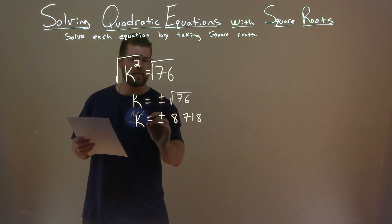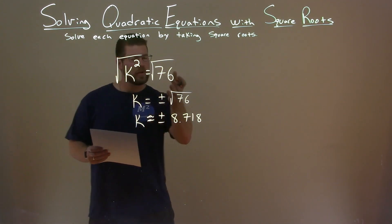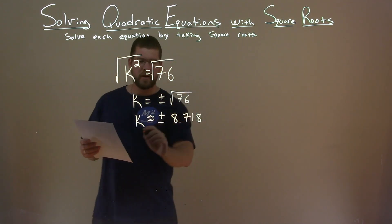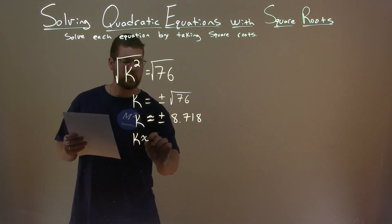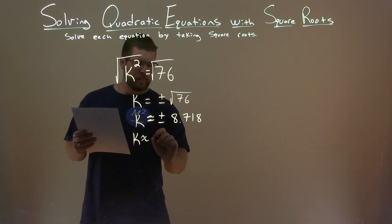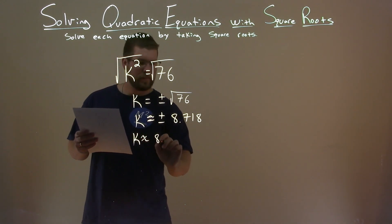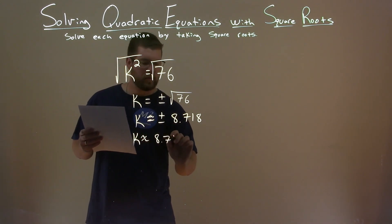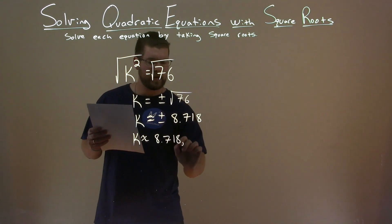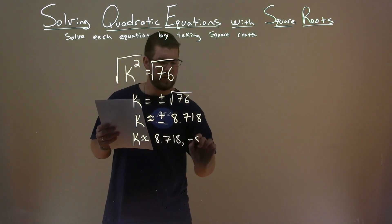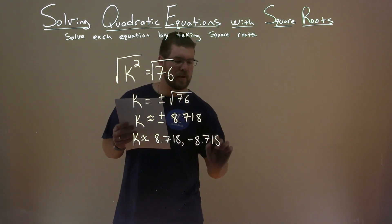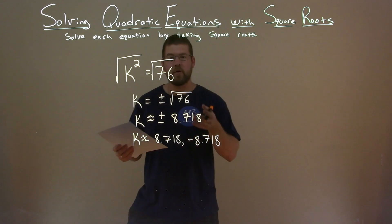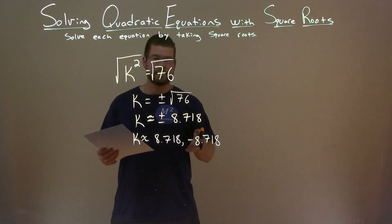So it's approximately plus or minus — we can write that as k is approximately positive 8.718 and negative 8.718. And there we have our answer.